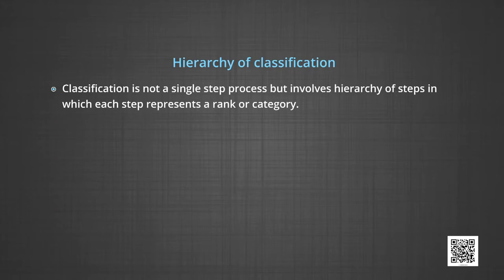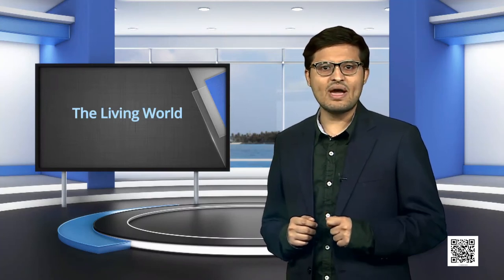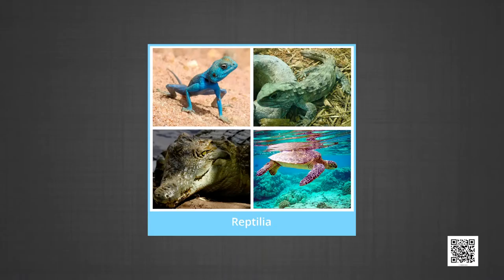The hierarchy of classification: classification is not a single-step process but involves a hierarchy of steps in which each step represents a rank or a category. A taxon is a taxonomic group of real organisms assigned to a category, whereas a taxonomic category represents a rank or level in the hierarchy and does not represent the living organism itself. For example, Reptilia is a taxon, but class is the category.